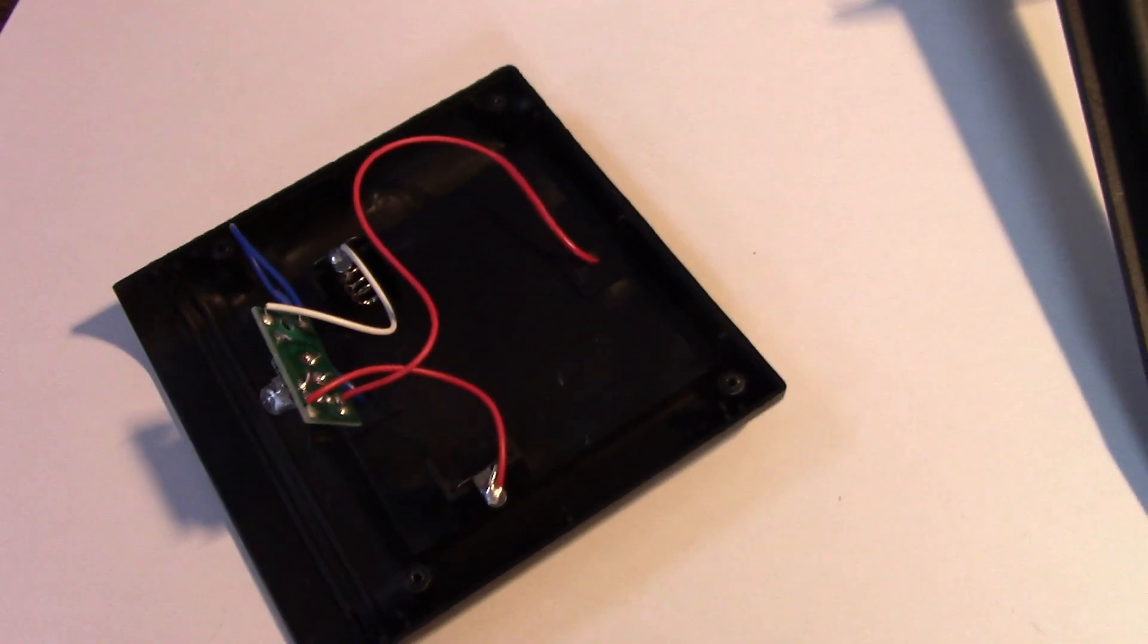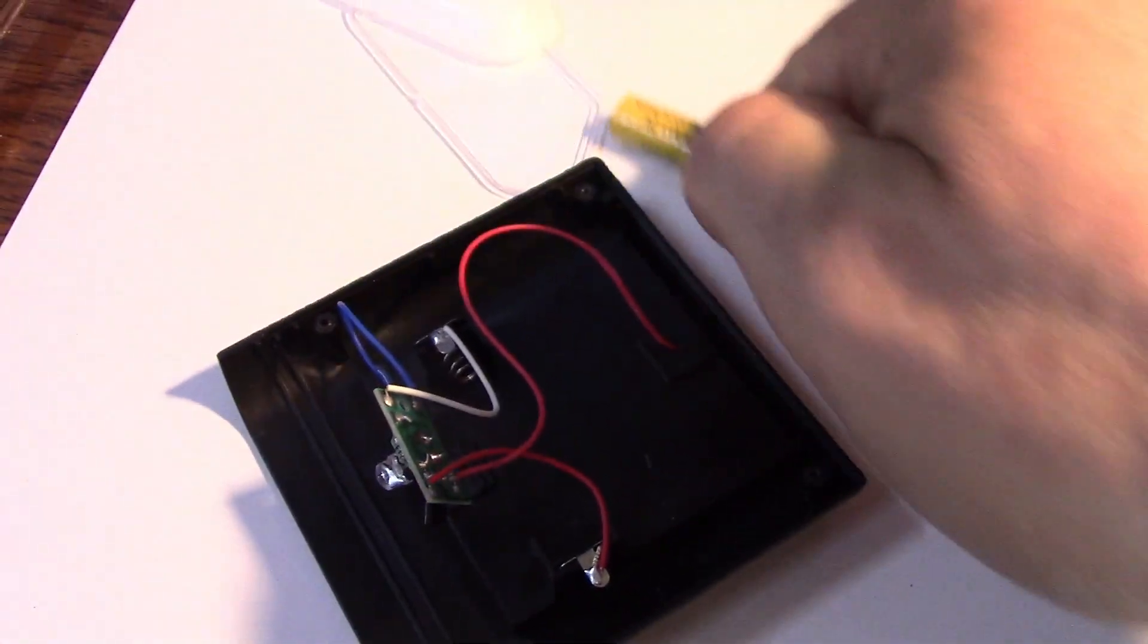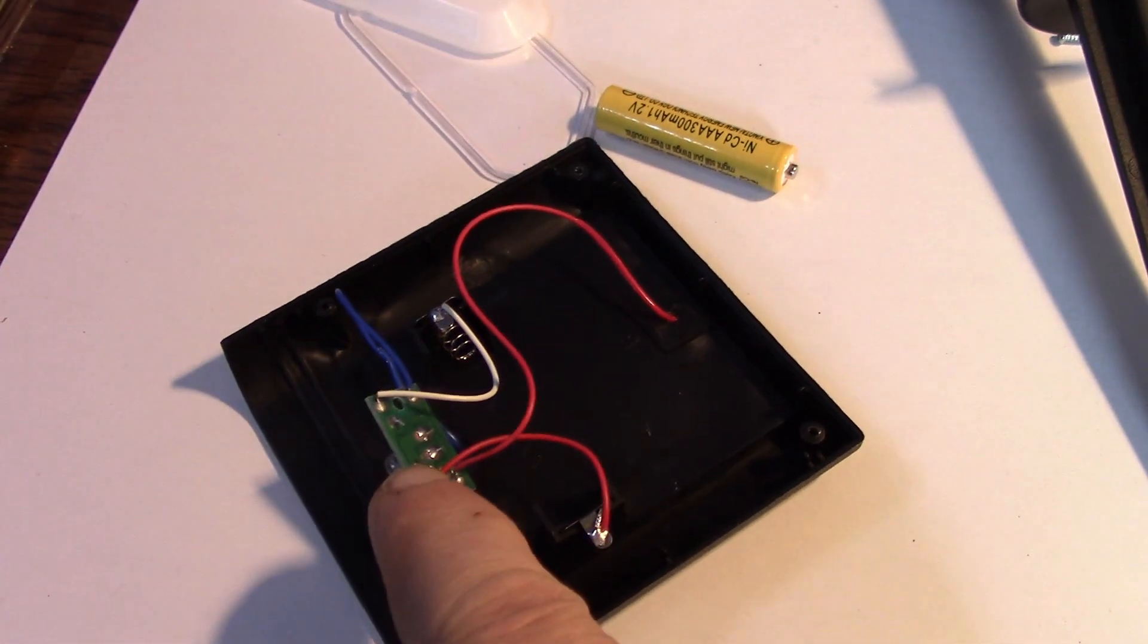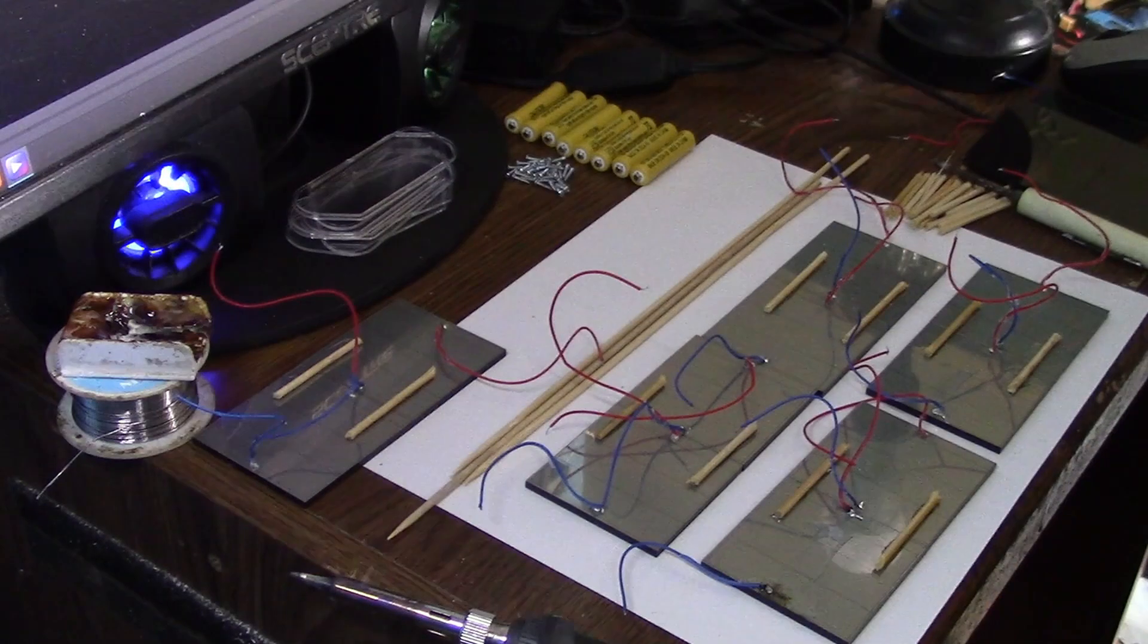The other thing is I've got a couple of ideas for different projects and I need the AAA holders, I need the batteries, I need the circuits, so I'll be taking each of these out of the housing.